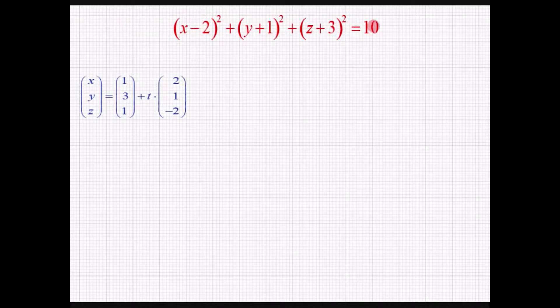Her har vi nemlig linjen for vores kugle, som vi kan se her. Og vores linje er givet ved følgende parameter for omstillingen, hvilket vi starter med at omskrive.